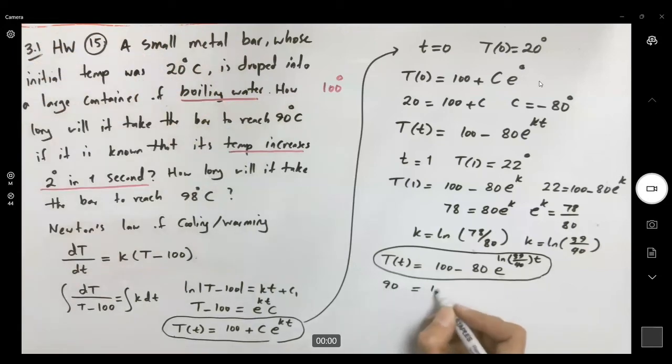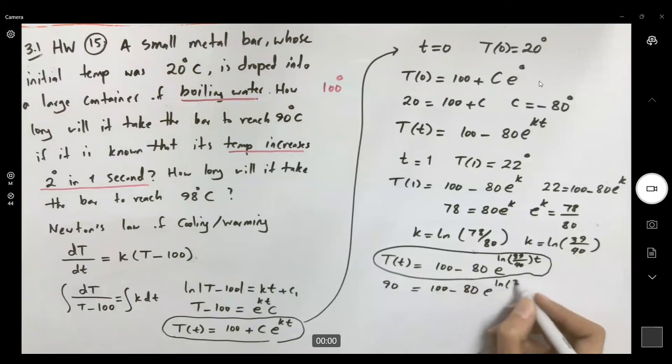90 degrees is equal to 100 minus 80 e to ln of 39 over 40t. So if you do the algebra,